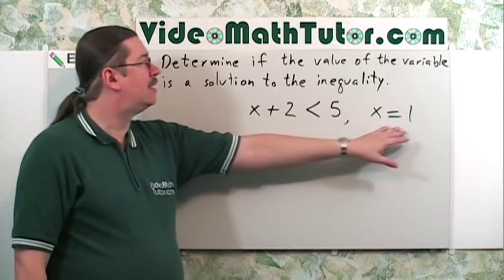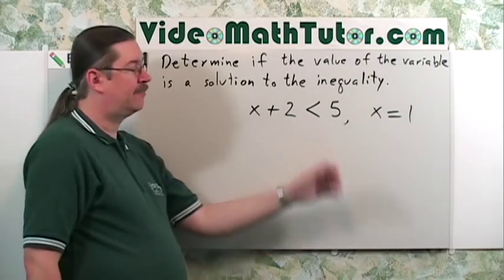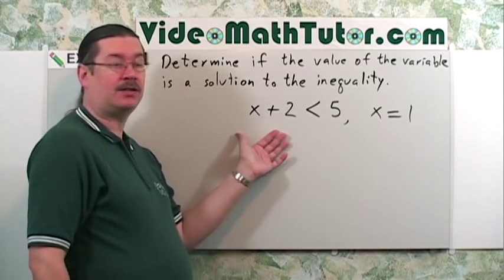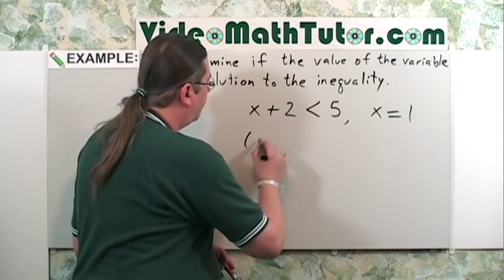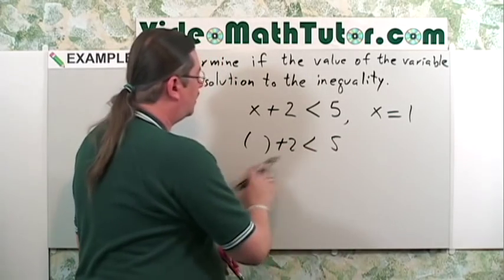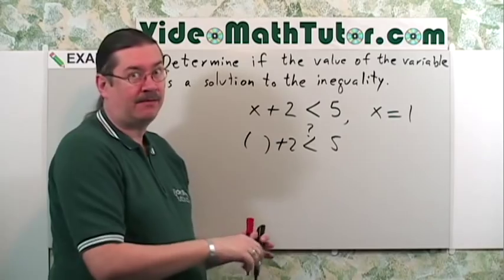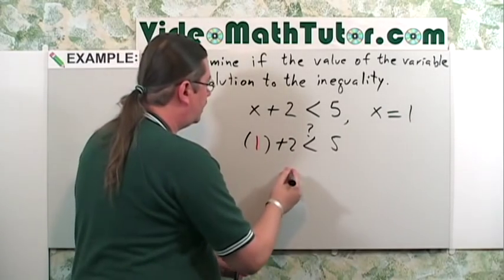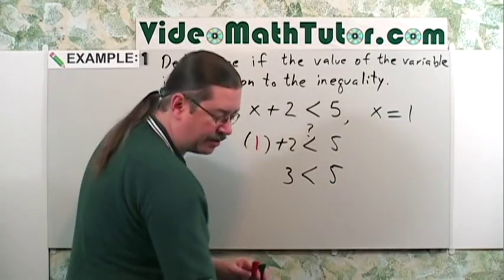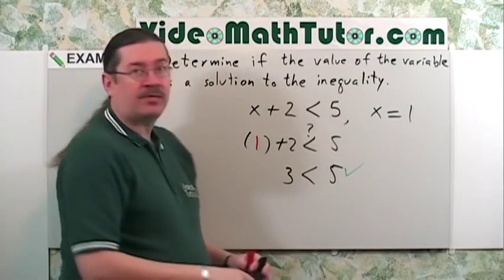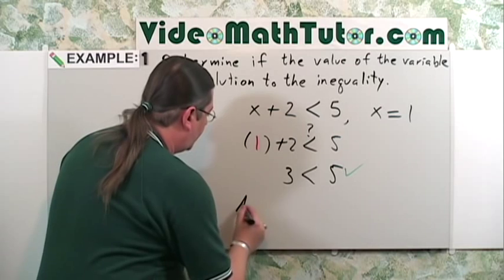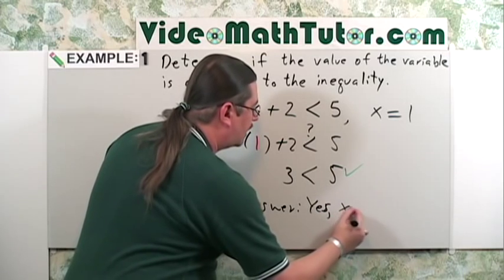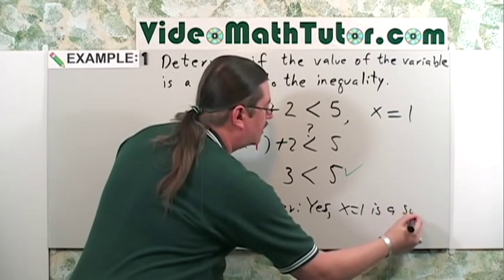Determine if the value of the variable is a solution to the inequality. To do this, all you need to do is substitute 1 in place of the x in the inequality. First, we'll set up a template: something plus 2 is less than 5. Put 1 in place of the x and simplify. 1 plus 2 is 3. Is that less than 5? It sure is — it checks. Answer: x equals 1 is a solution.